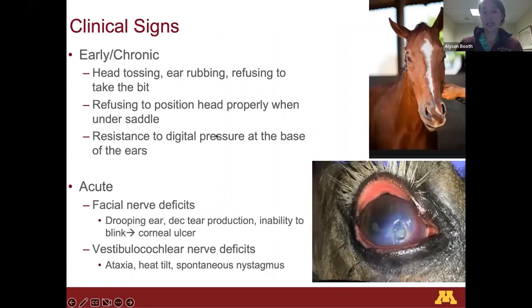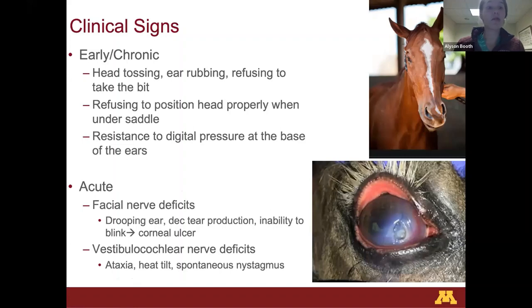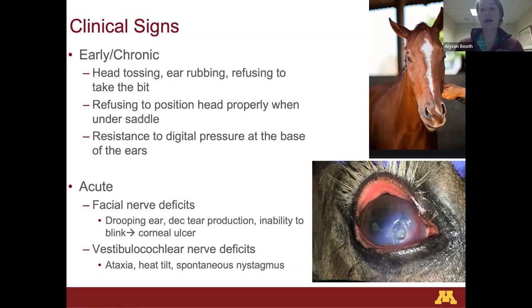In the early stages, clinical signs can be as simple as head tossing, ear rubbing, not wanting to take the bit, not wanting to come into a frame, or becoming head shy. You ask them to move forward and come into a frame and they don't want to. You've ruled out that their back and legs are okay, and then when you touch their poll, they get sensitive. All of those could potentially be early signs that a horse has THO.